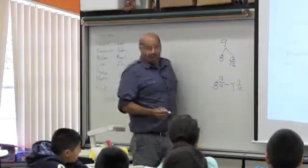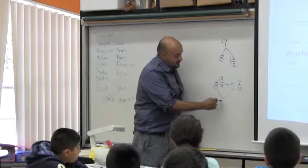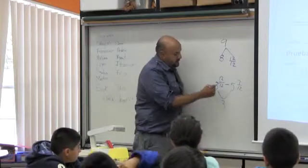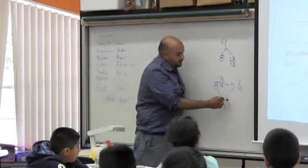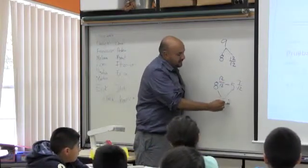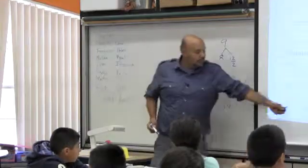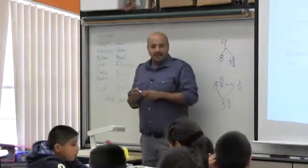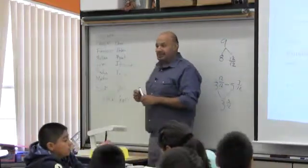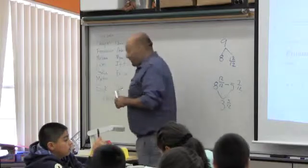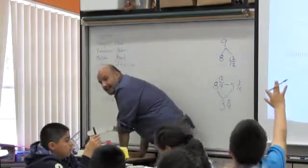Can we do this problem now, Jose? Eight minus five is three. And twelve-twelfths minus seven-twelfths is five-twelfths. Three and five-twelfths. Amy gave that answer — she got it right. Do you see, Jose? Yeah. Okay.